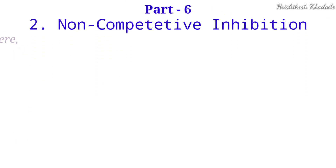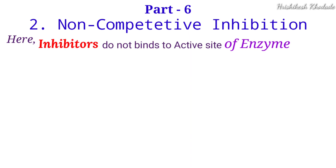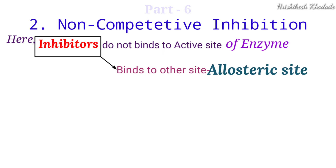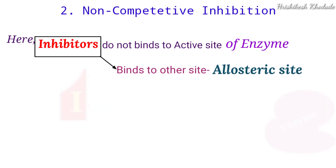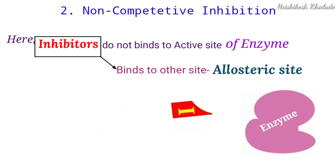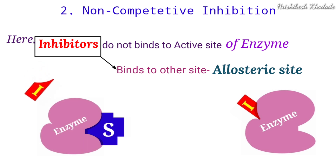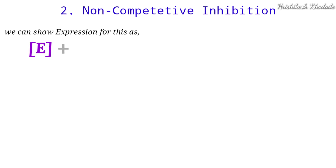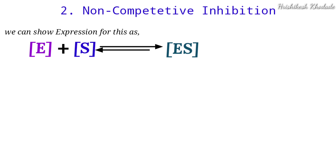In non-competitive inhibition, the inhibitor does not bind to the active site — please note this. Instead, they bind to a site on the enzyme other than the active site. They have the capacity to bind not only with the free enzyme but also with the enzyme-substrate complex, but at a different site, not the active site.